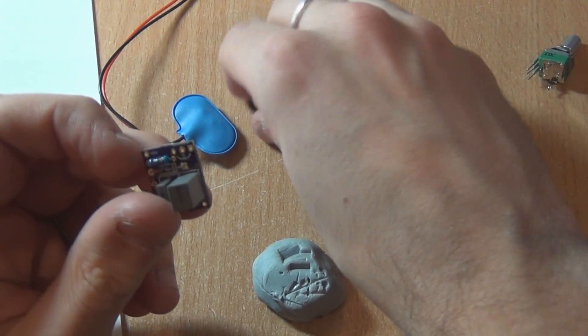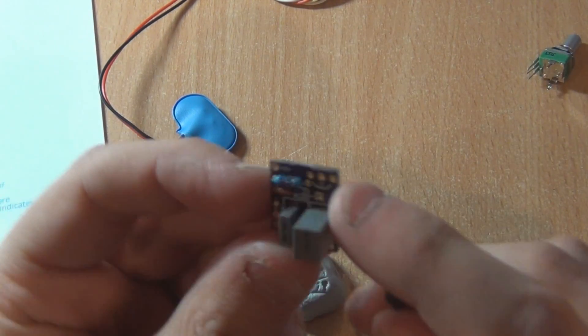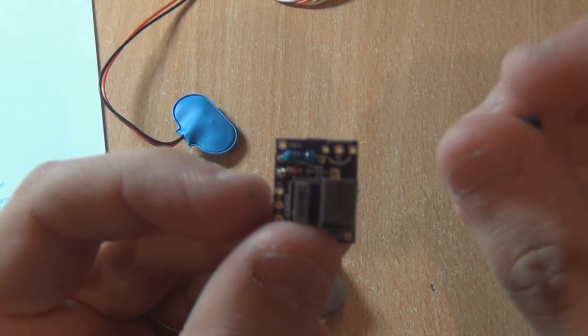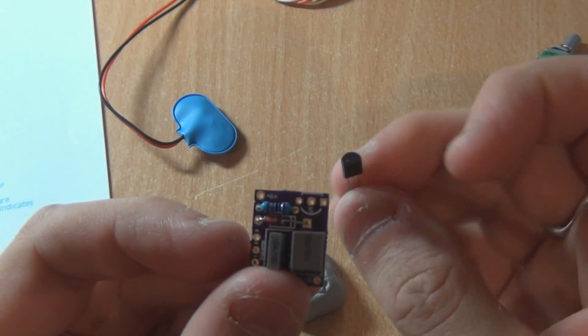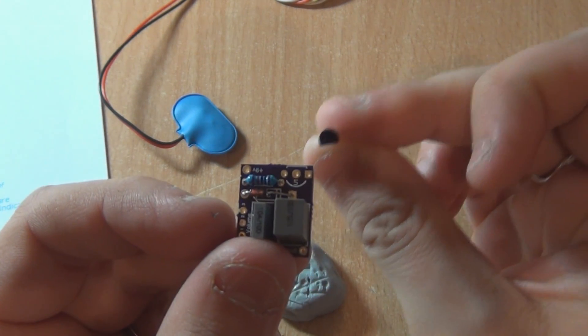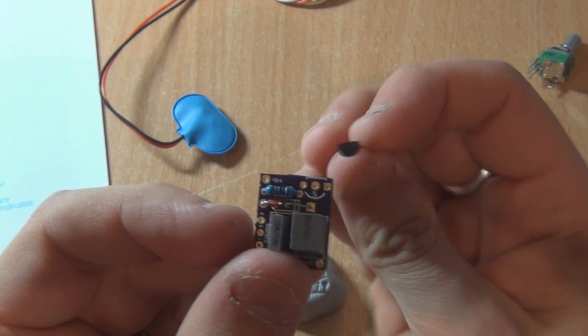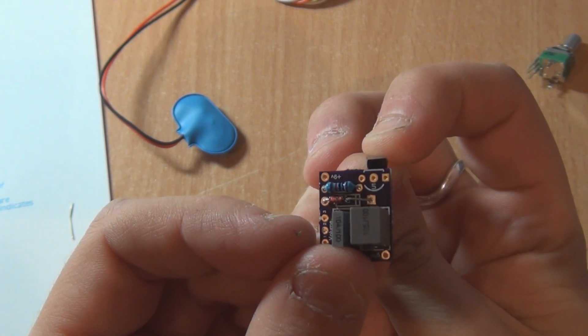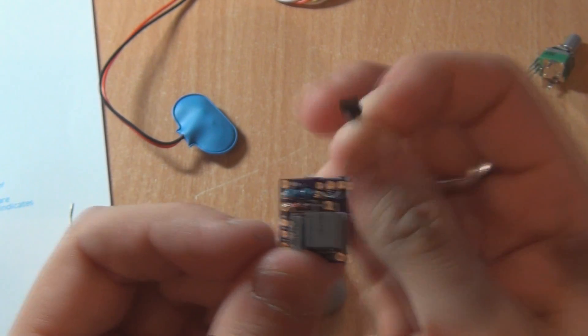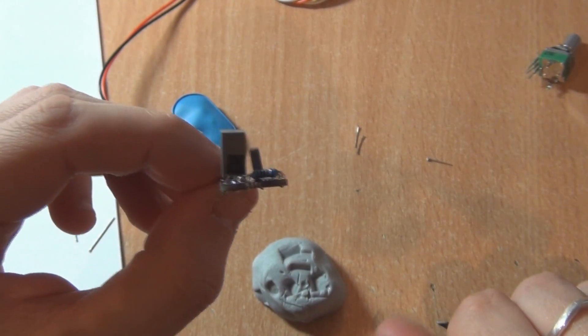And next we'll do the transistor. And the transistor's actually got on the silk screen, shows you which way around to put it. One side of the transistor is flat, as you can see. And as you can see on that, it'll actually be around that way. The silk screen shows you which way to put it in. So that one's in like that.